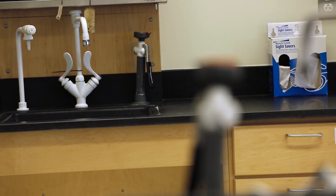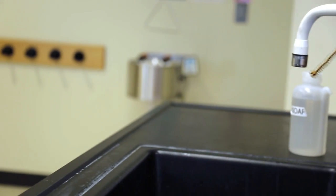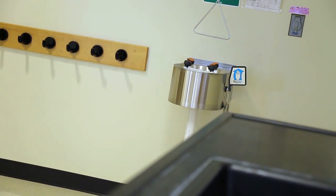An eye soaker is located at every sink in the lab. These are easily accessible and should be used immediately until someone can assist you to the main eyewash station.